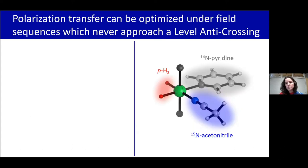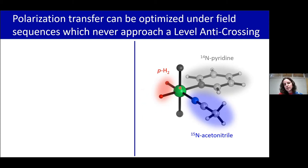I want to introduce the polarization transfer complex I've been using for all of my experimental data, along with the numerical simulations I'll be showing. This is our iridium catalyst. In the axial positions we do have ligands, but they're unimportant for this talk, so I've truncated those out. We have parahydrogen associated in the equatorial plane. Our target ligand is 15N acetonitrile, with our target nucleus of 15N, coupled out to the three methyl protons. And then we have a silent co-ligand used to stabilize the complex, which is just unlabeled pyridine.